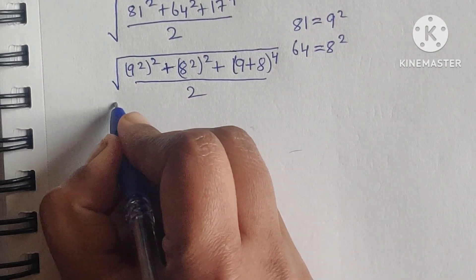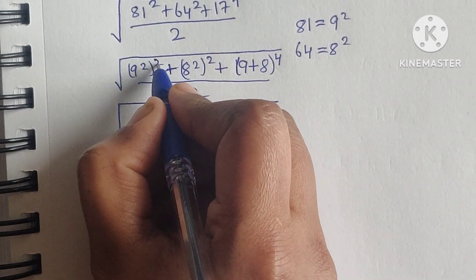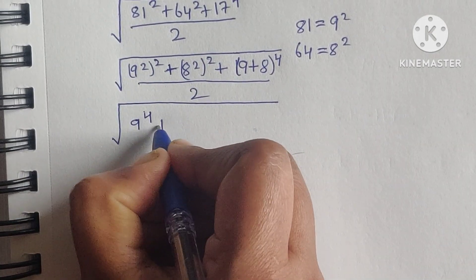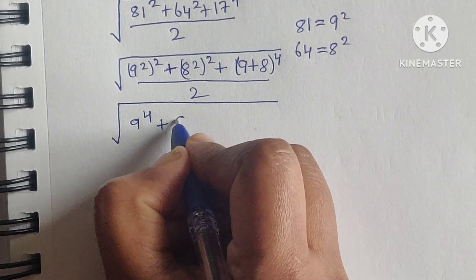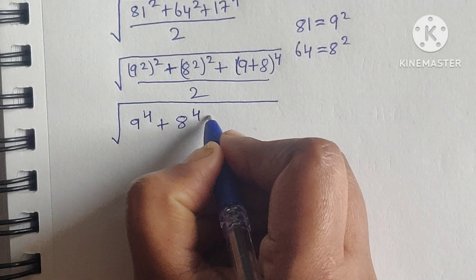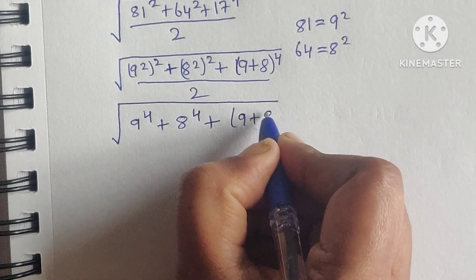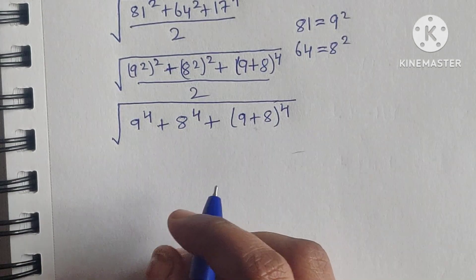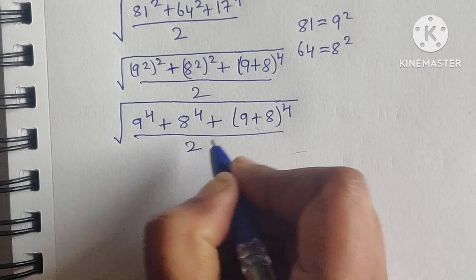This gives us the square root of 9 to the power of 4, plus 8 to the power of 4, plus 9 plus 8 whole to the power of 4 divided by 2. Now we also note that 17 can be written as 9 plus 8.